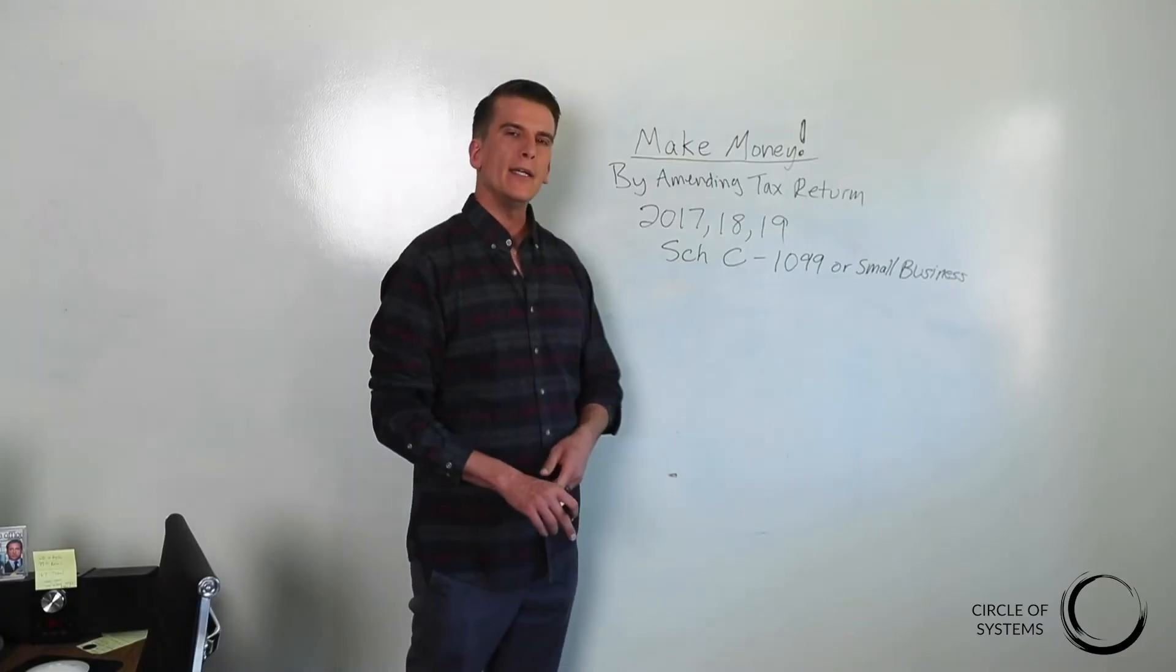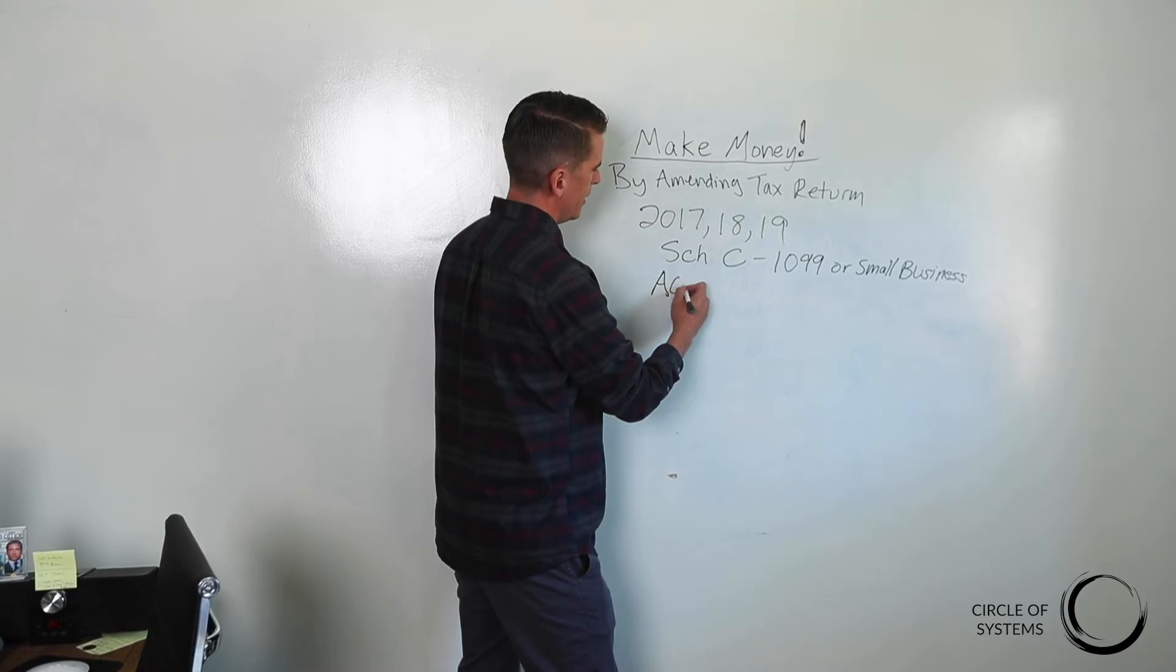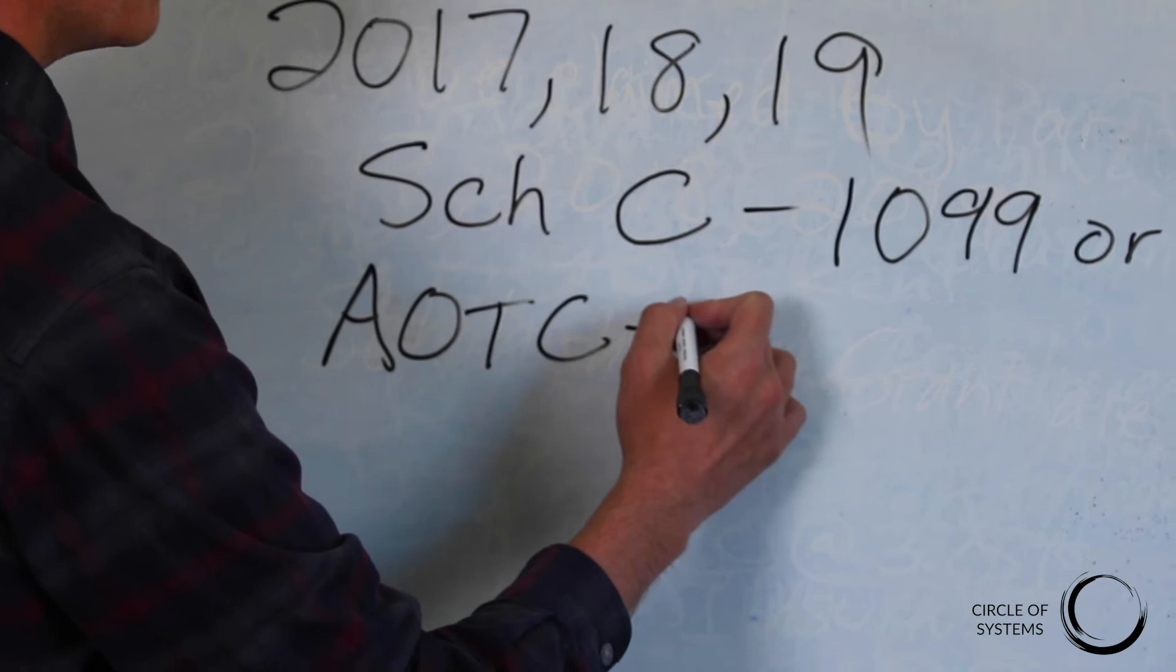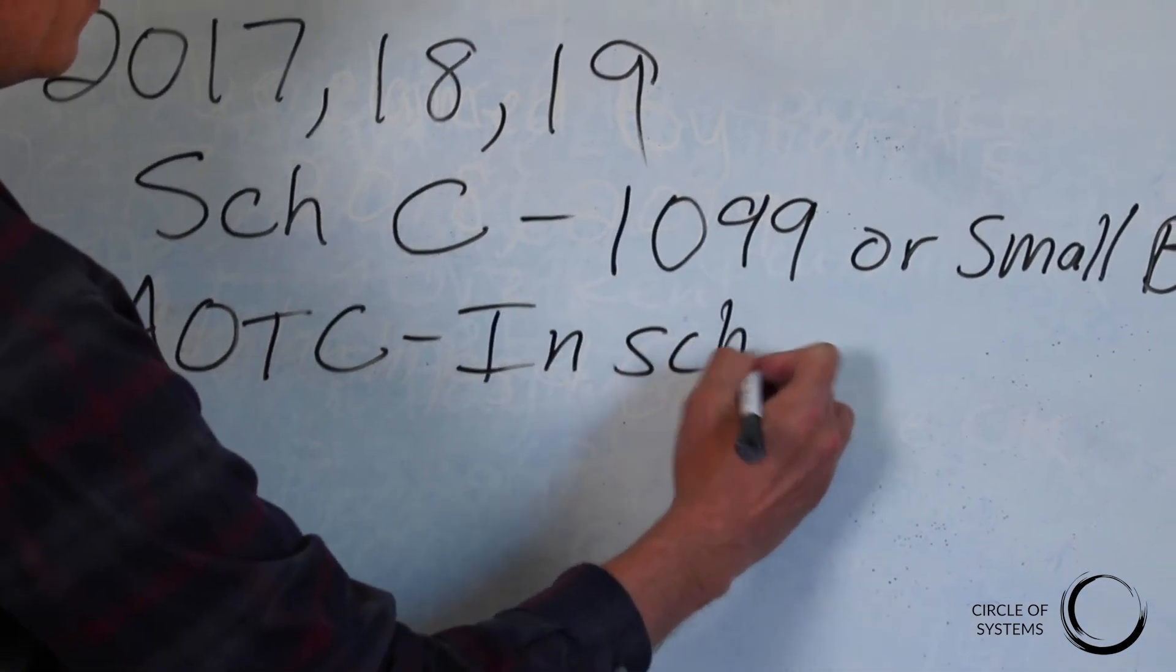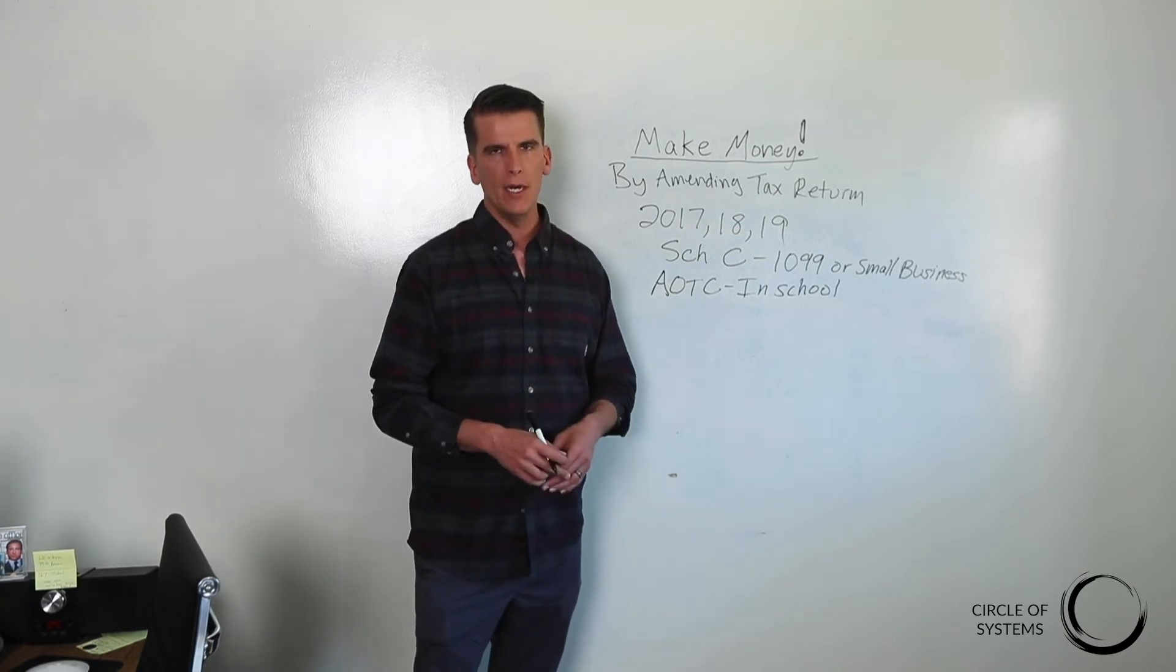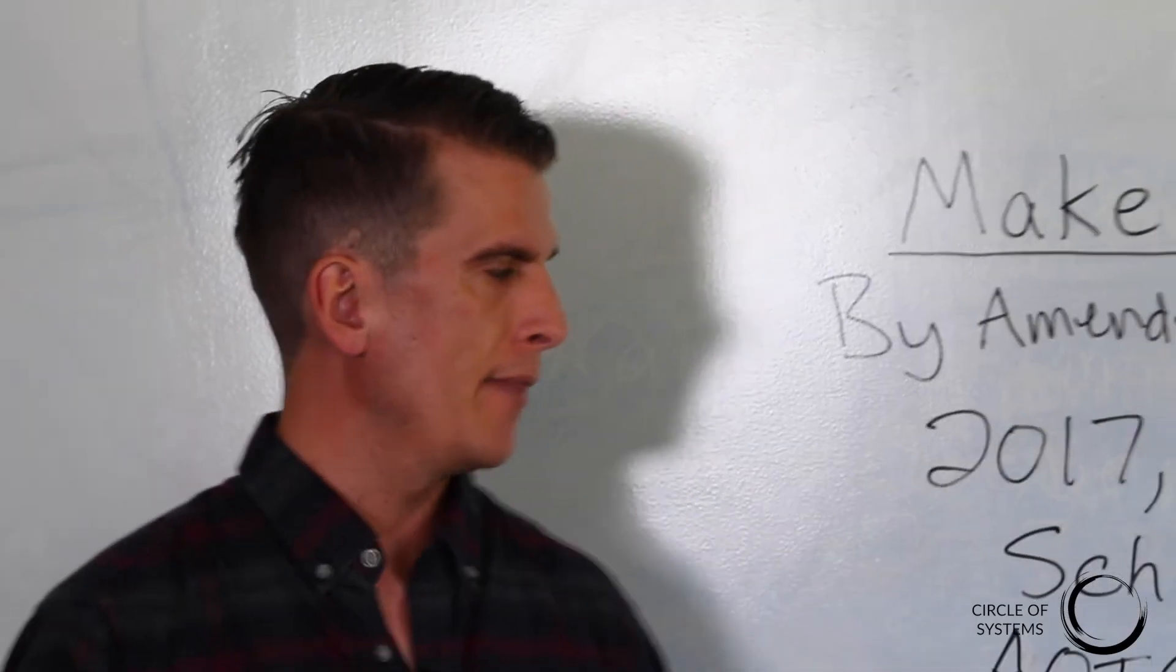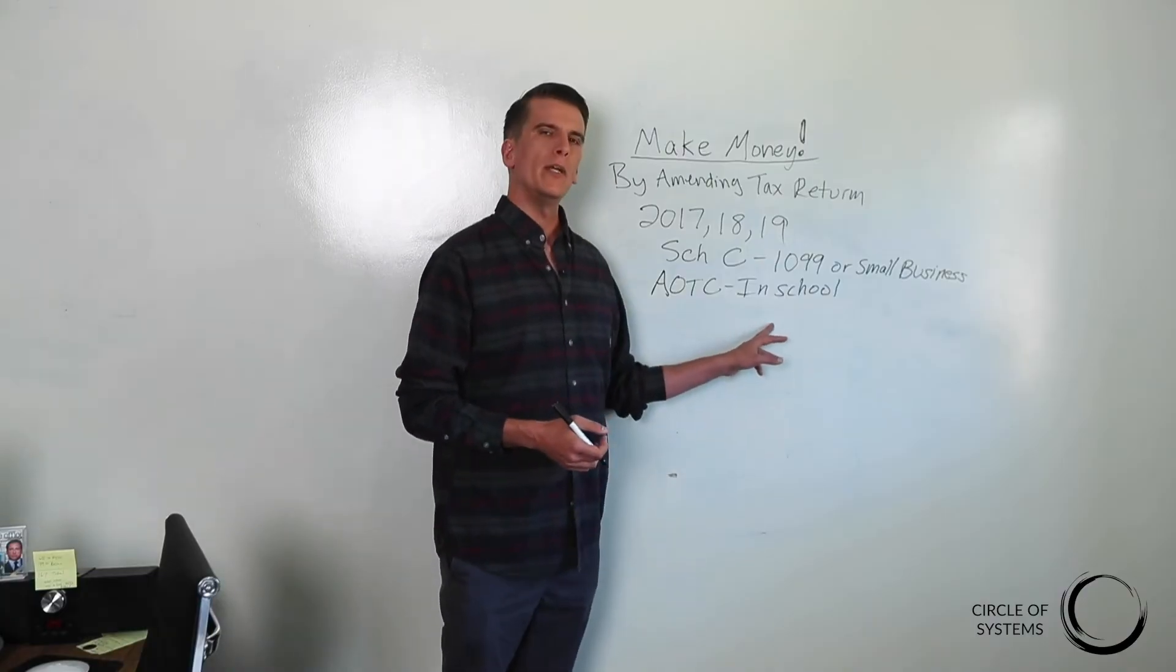Another great area is the AOTC. Hopefully you watched the video on the American Opportunity Tax Credit. But if you were in school at all in those three years as a half-time student, send your stuff over. Let us check it out. If you were in school, make sure you let us know when you drag and drop and fill out the form. Let us know that you were in school at least a half-time student, because if you didn't put it on there at all, we're not going to know that you were even in school.